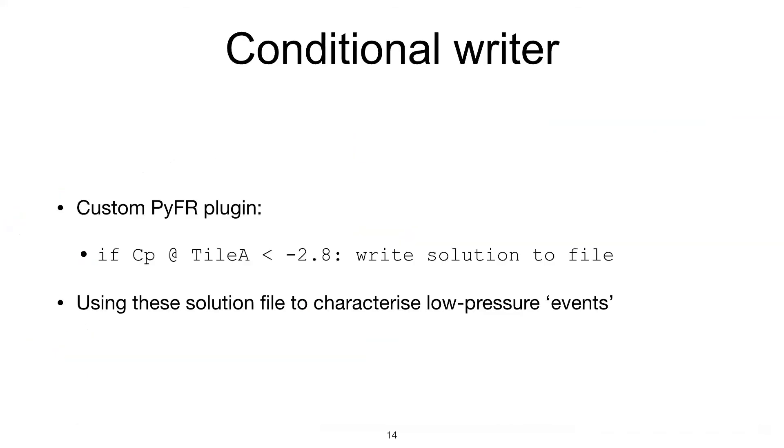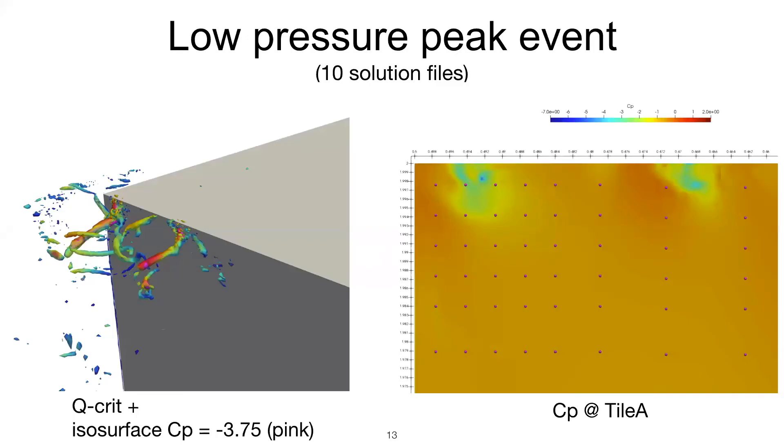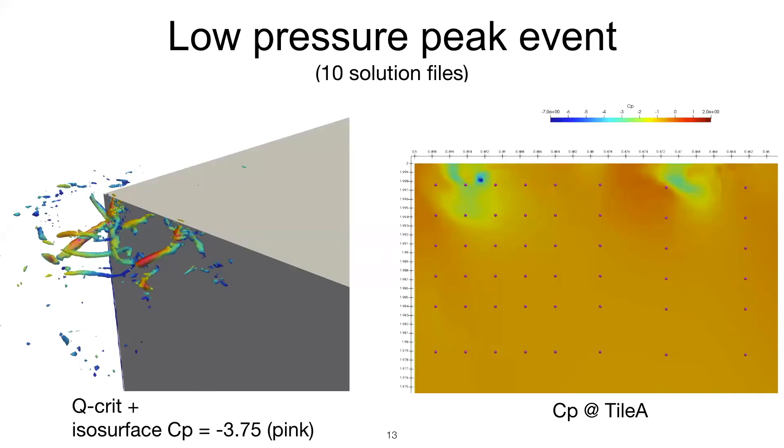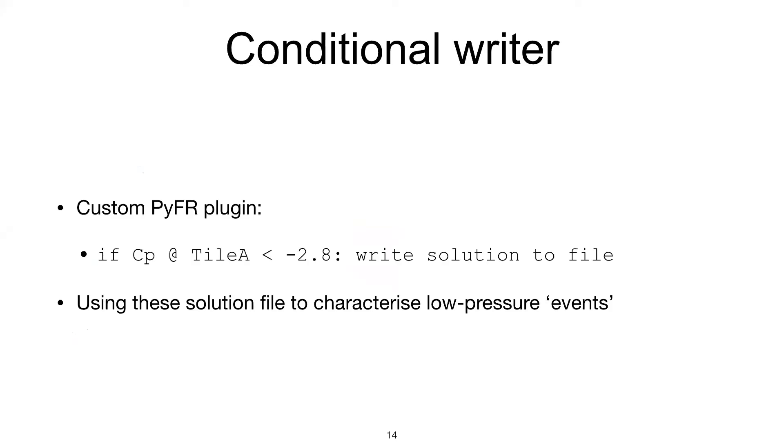So we got one in reasonable time. One thing to note is that the pressure probes of the experimental results would have not picked it correctly because they would have missed the lower extreme values. How did we manage to have a look at this? It was a very simple solution. If you're familiar with PyFAR and attended yesterday's workshop, you know we have plugins. We created a custom plugin that's a mix between a writer and the plugin that computes forces on solid walls. I call it a conditional writer. It simply says: if the CP in a particular region of my building goes below a certain threshold, in this case CP minus two, then dumps the whole solution to file.